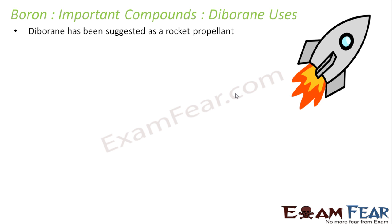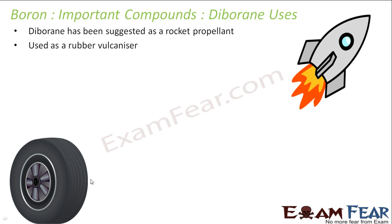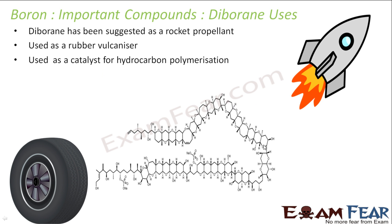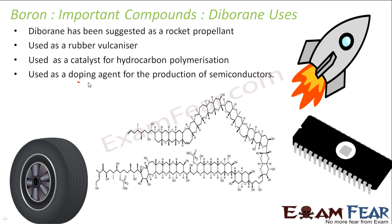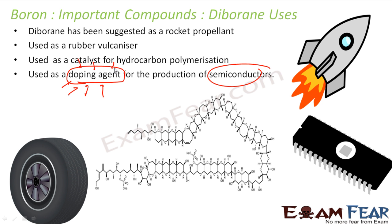The uses of diborane: it is used as a rocket propellant, as a rubber vulcanizer, as a catalyst for hydrocarbon polymerization — where hydrocarbons form long chains through catenation — and it is also used as a doping agent for semiconductors.